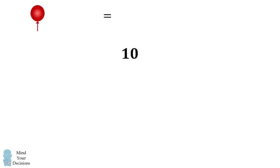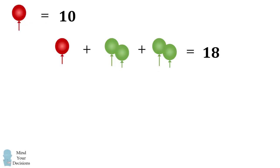We'll use this value to solve the second equation. We have a red balloon plus a pair of green balloons plus a pair of green balloons is equal to 18. The red balloon is equal to 10 and then we have two of the pairs of green balloons and this all equals 18. We can then solve that a pair of green balloons is equal to 4.